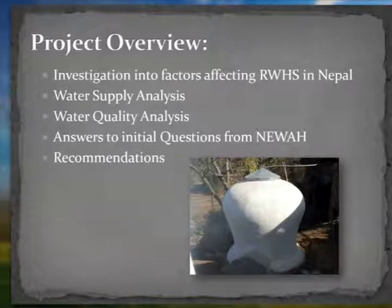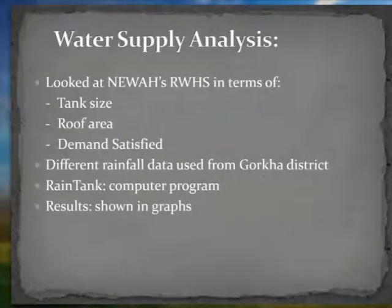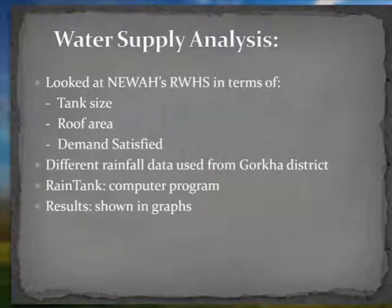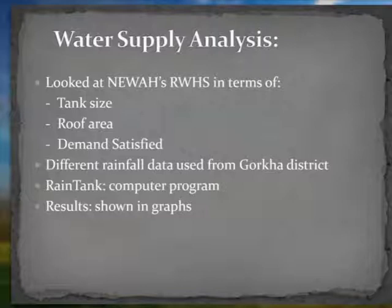The water supply analysis looked at NIWA's rainwater harvesting system in terms of tank size, roof area and demand satisfied. Annual rainfall data was used from the Gawker district and was converted into daily data sets to be used in a water balance program called Rain Tanks. This gave some ideas as to how much demand can be satisfied in an average rainfall year. However, it is important to note the results may not be completely accurate due to assumptions and limitations of available data, which are outlined in the report.